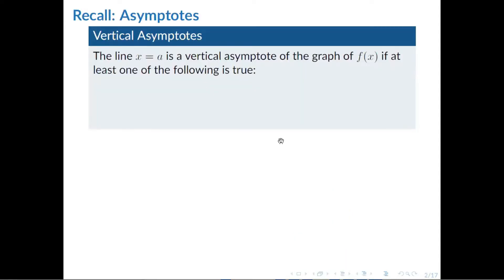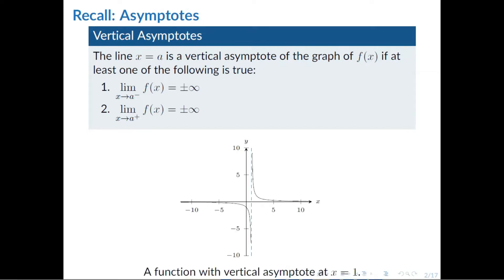First, we recall the properties of the different asymptotes. We will have a vertical asymptote on f(x) if at least one of the following is true: the limit of f(x) as x approaches a from the left is positive or negative infinity, or the limit of f(x) as x approaches a from the right is positive or negative infinity. Here's an example — we have a vertical asymptote at x equals 1, and as you approach it from the left, it goes to negative infinity, and from the right, it goes to positive infinity.